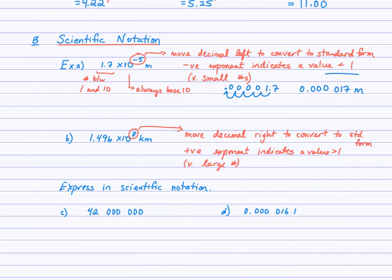If you're going to take a number from standard form into scientific notation, it requires that you place the decimal after the first non-zero digit — so after the 1 here. So we'll have 1.7, and then move the decimal back to where it was, and we see that it's times 10 to the negative 5. You can move either direction back and forth, moving the decimal 5 places.